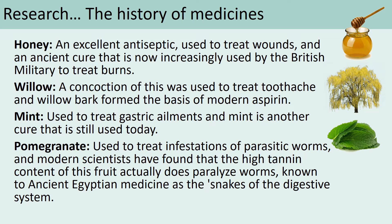The final one is pomegranate, which is quite interesting — it's used to treat infestations of parasitic worms. They found it has a high amount of a chemical called tannin, which actually paralyses worms in the digestive tract and gets rid of them, passing them through with your faeces.